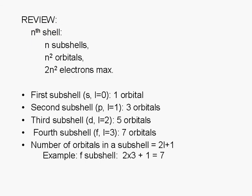The first subshell is called the s subshell, and it consists of one orbital. The second subshell is called the p subshell, and it consists of three orbitals. The third subshell is called the d subshell, and it consists of five orbitals. The fourth subshell is called the f subshell, and it consists of seven orbitals. In general, the number of orbitals is equal to 2L + 1, where L is the orbital quantum number.